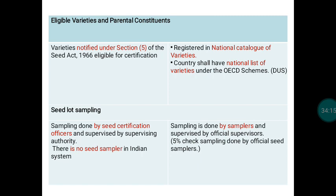Under OECD, the samplers are recognized and authorized persons who collect samples, supervised by official supervisors to check genuineness. Five percent of samples taken by authorized samplers are cross-verified by official seed samplers. In IMSCS, the government official — the SCO — is solely responsible for sampling, whereas in OECD scheme, authorized private persons act as samplers under official supervision.